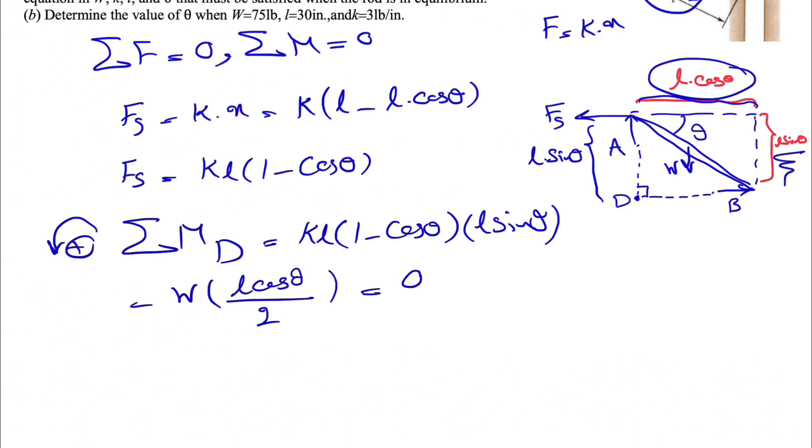By the way, in the beginning, we assumed that F_S is to the left. One quick way to come up with the correct direction is that we know W is always downward, so it's going to make a clockwise moment. That shows that our F_S has to be counterclockwise in order to satisfy the equilibrium condition. So that's why I considered it to the left. But even if you consider it to the right, you'll get a negative sign that will compensate for that wrong assumption.